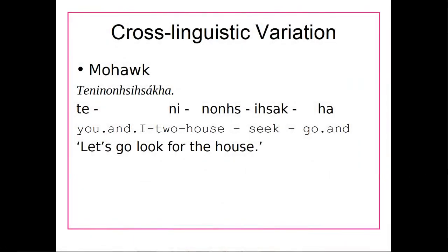Mohawk, on the other hand, can put a whole lot of meaning into one word. In fact, the same sentence in Mohawk — 'let's go look for the house' — is one big long word, where they have the morpheme meaning 'you and I,' the morpheme meaning 'two,' the one for 'house,' the one for 'seek,' and the one for 'go.' So basically, they have a whole lot of different morphemes in one word — a whole lot of meaning crammed into one word — as opposed to Emgeni, where we just had one bit of meaning per word.